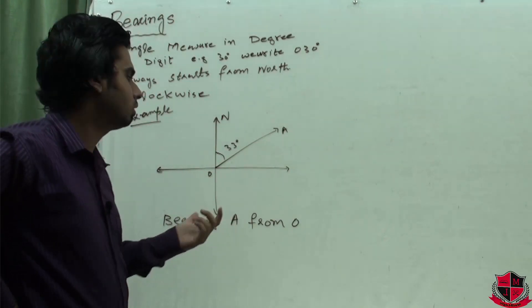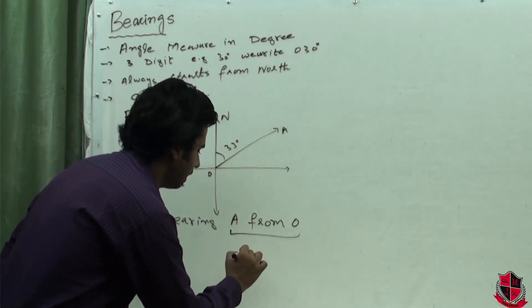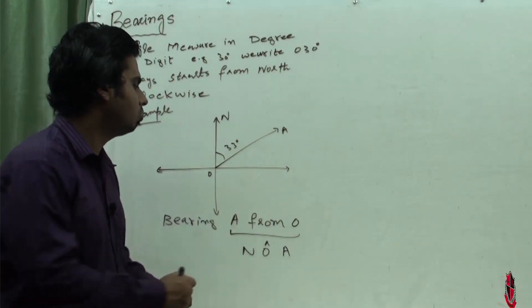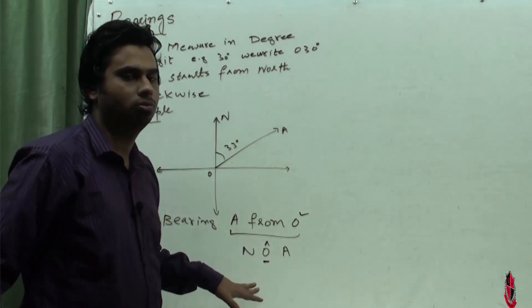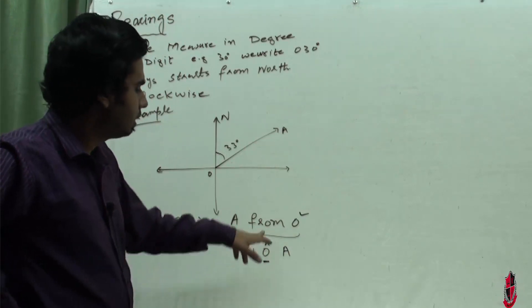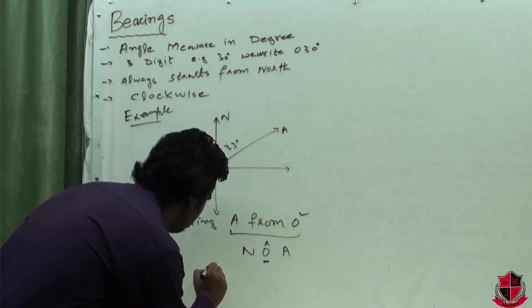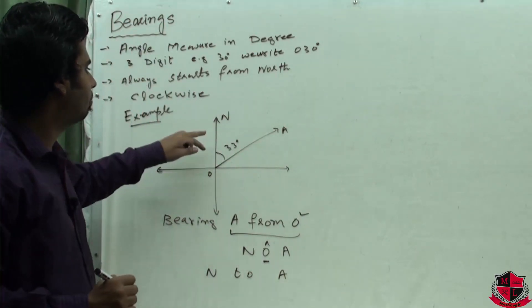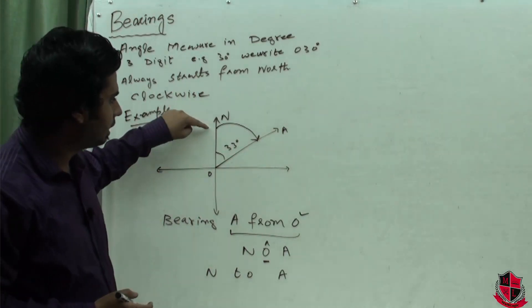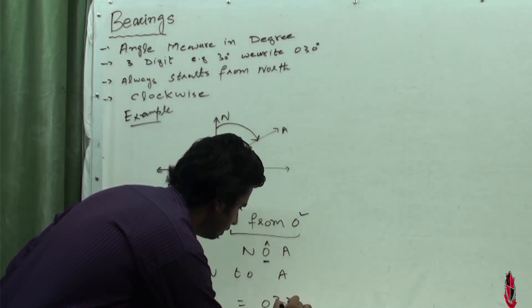We are going to find bearing A from O. One thing to keep in mind: A from O means angle NOA. The word after 'from' always comes between N and O, meaning the angle is formed at O. Whenever you find bearing A from O, remember it means NOA - the word after 'from' comes in the middle, and the angle forms at that point. We start from N and end at A. The angle between N to A is 33 degrees, so bearing from N to A is 033 degrees. This is our first simple question involving bearings.